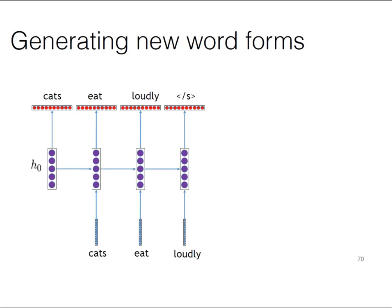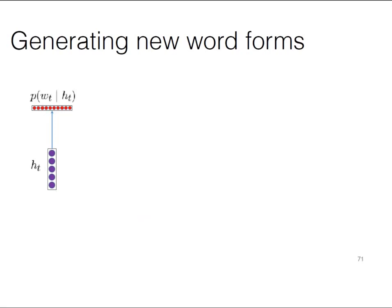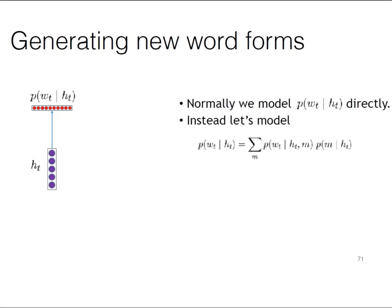We can do the same thing when generating word forms, using a mixture model. At every time step in, say, our RNN language model, we're going to sample a word to generate. We're going to split this into three different ways we can generate the word: we can generate a word straight from the vocabulary, we can generate it through morphological composition, or we can generate it character by character.